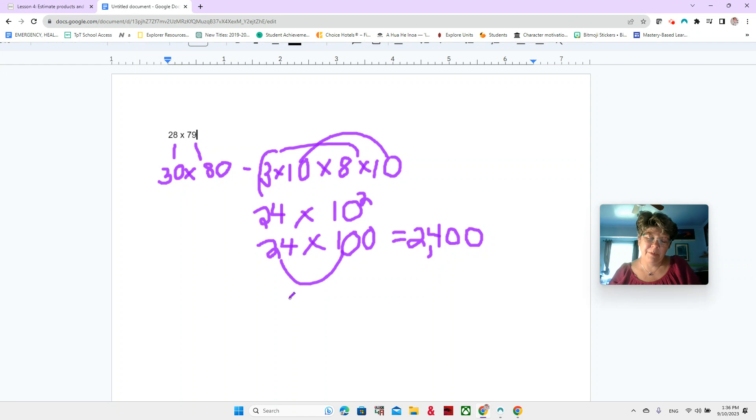Very good. Do you think that this estimate 2400 is greater than or less than the actual product of 28 times 79? You notice that we rounded this one up to 30 and we rounded this one up to 80. So 2400 is a little bit more than the actual multiplication. The actual multiplication would be 2112, but 2400 is a very close estimate to that actual product.